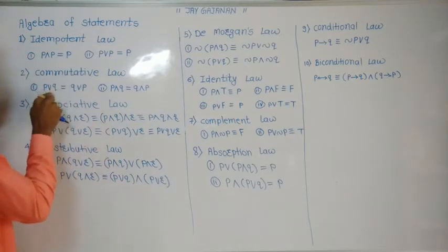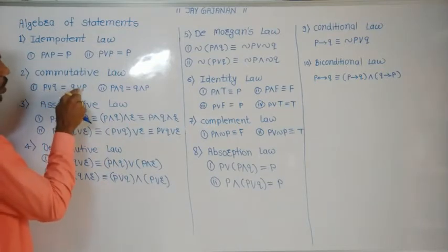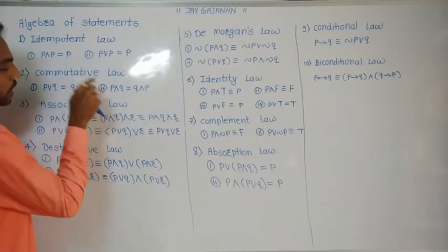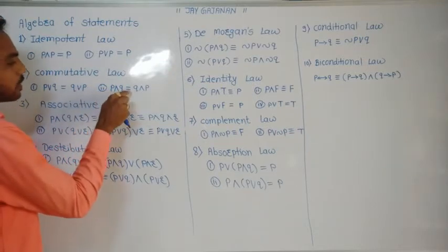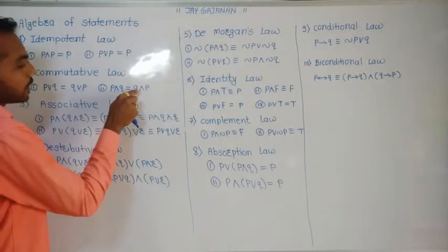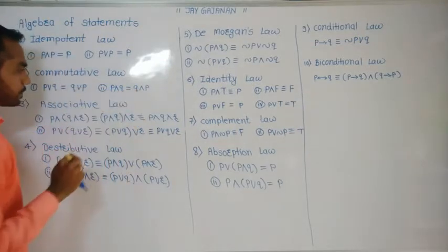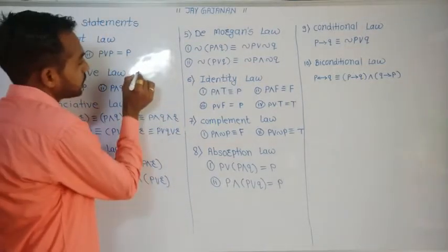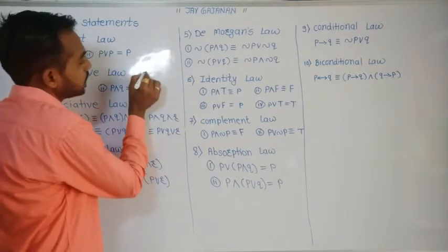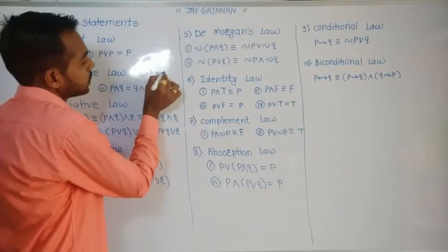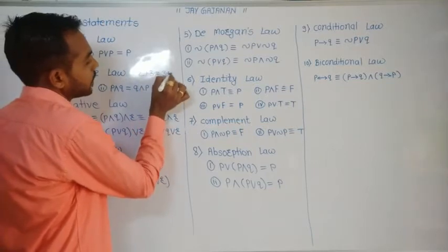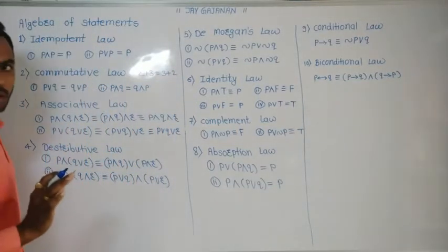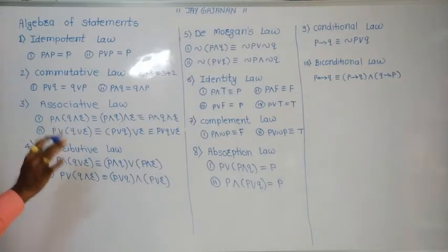The second law is the commutative law: P or Q equals Q or P, and P and Q equals Q and P. We know that in mathematics we can write 2 plus 3 is equal to 3 plus 2 — that is the simple commutative law.